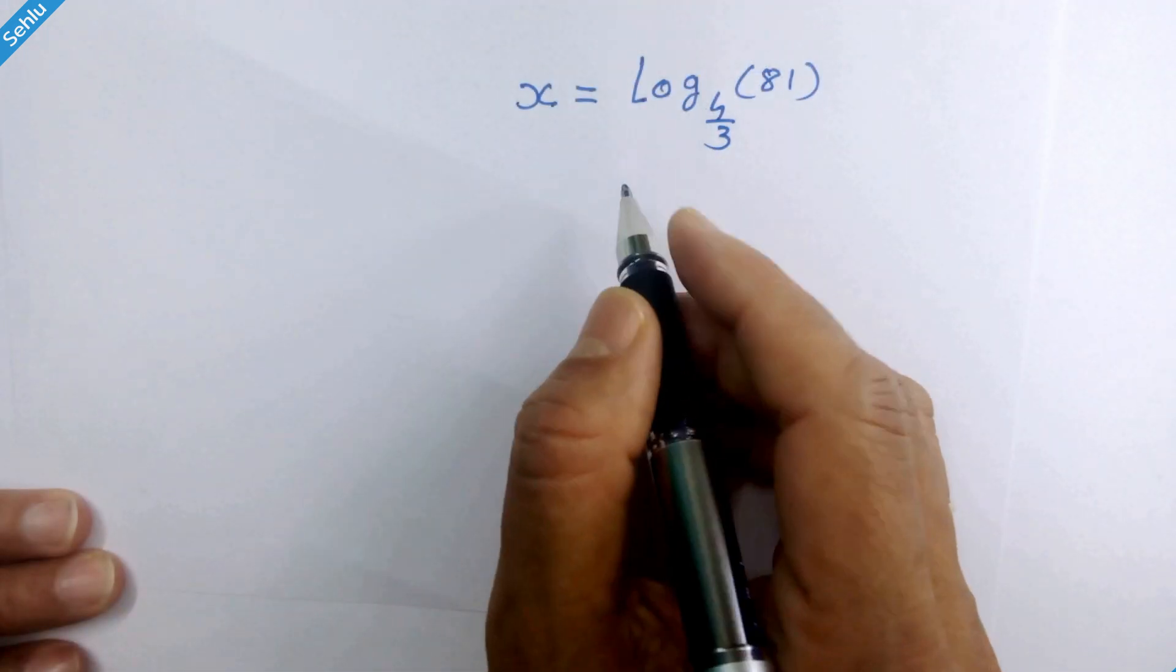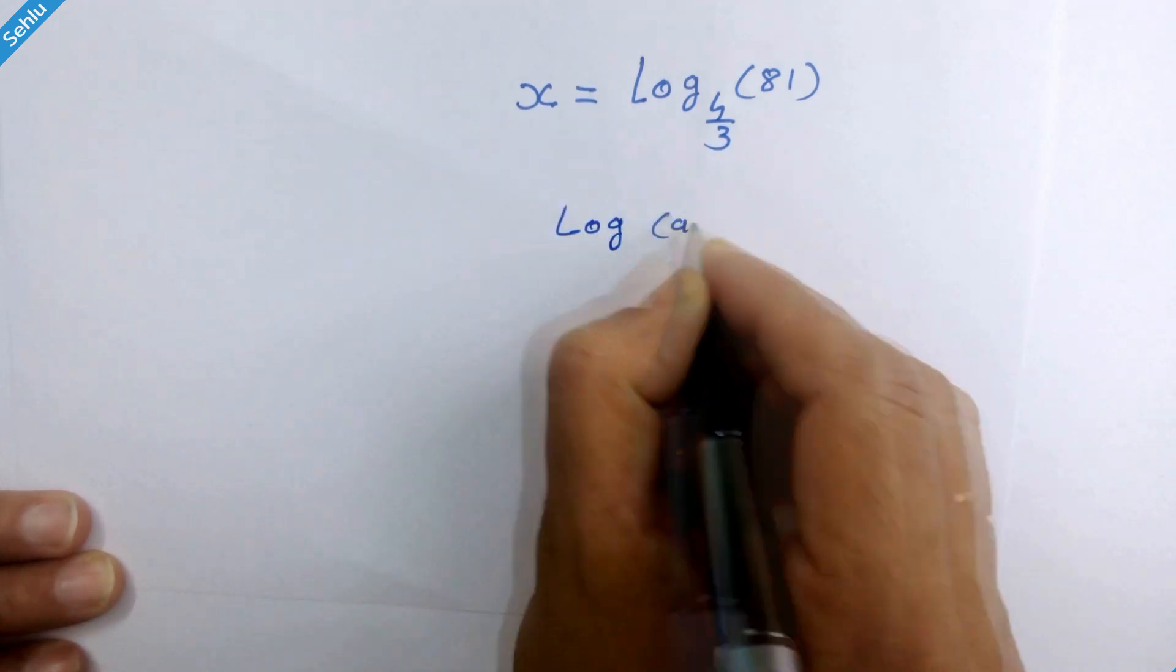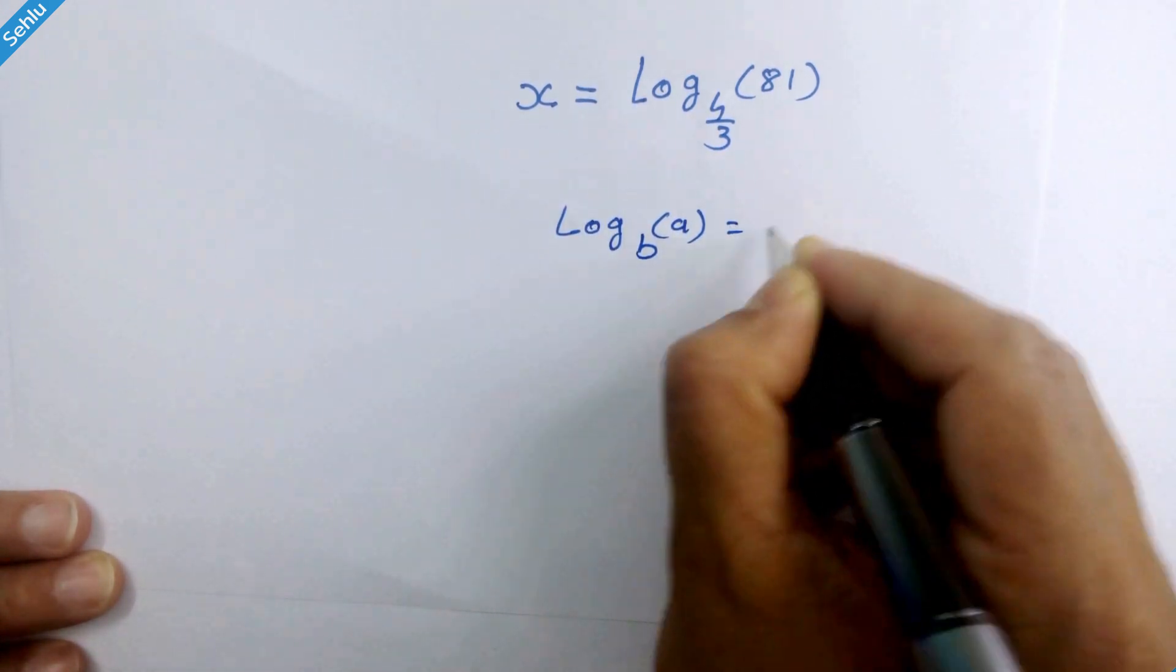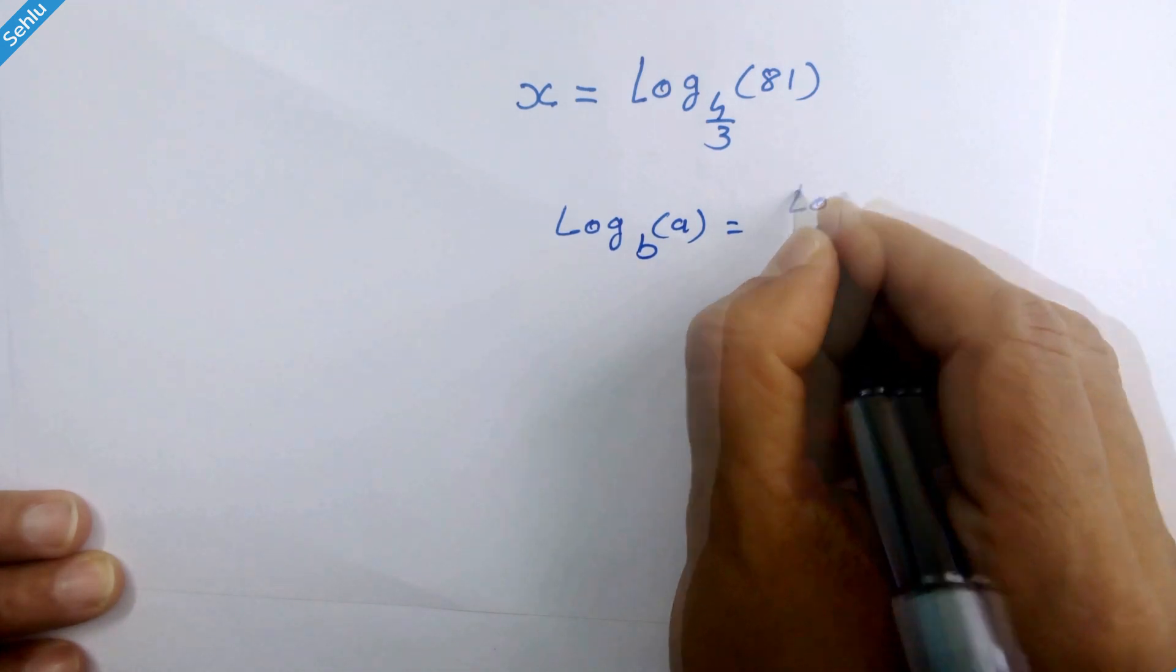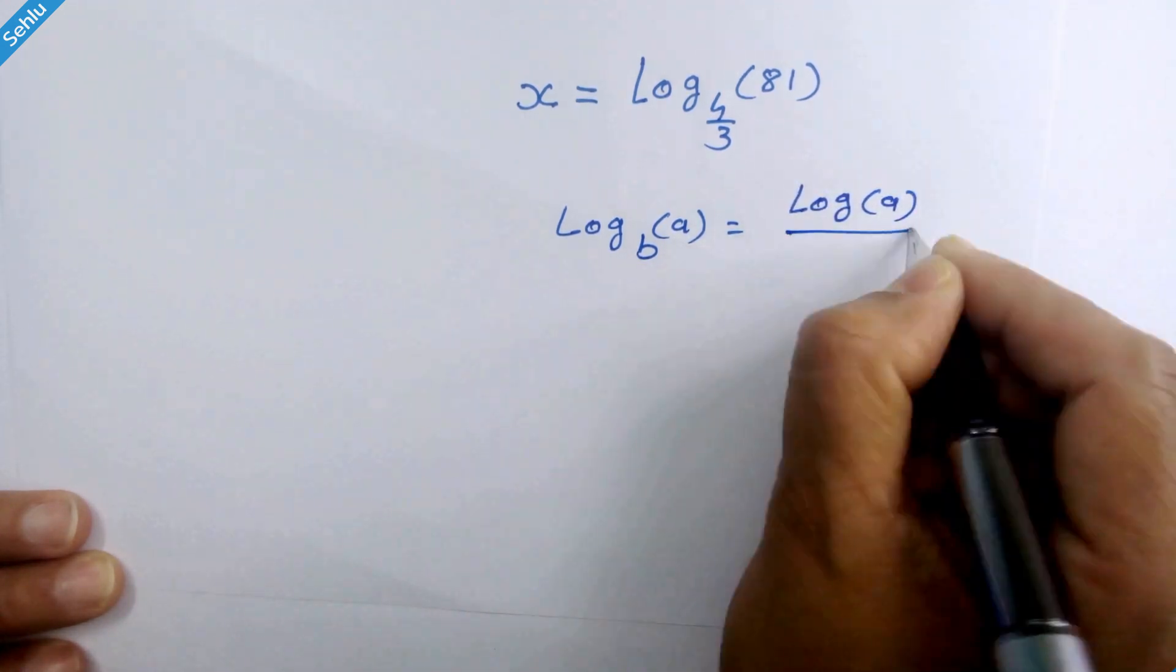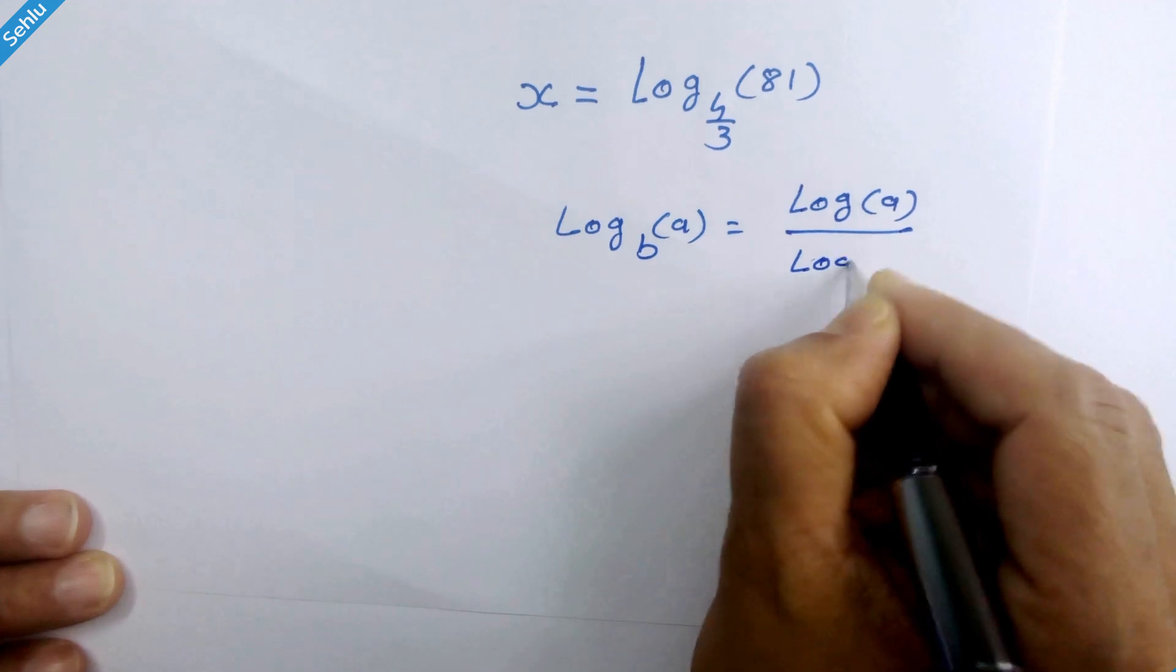Now as per the rule log of a base b it can be written as log of a over log of b.